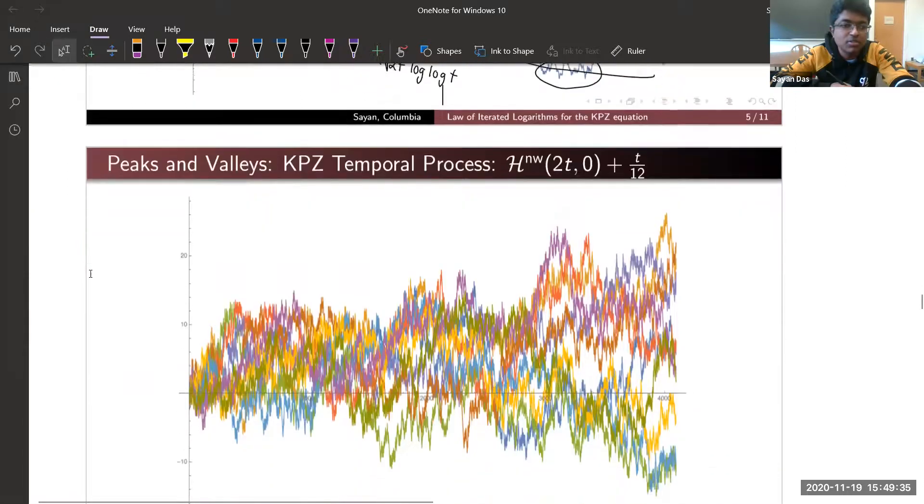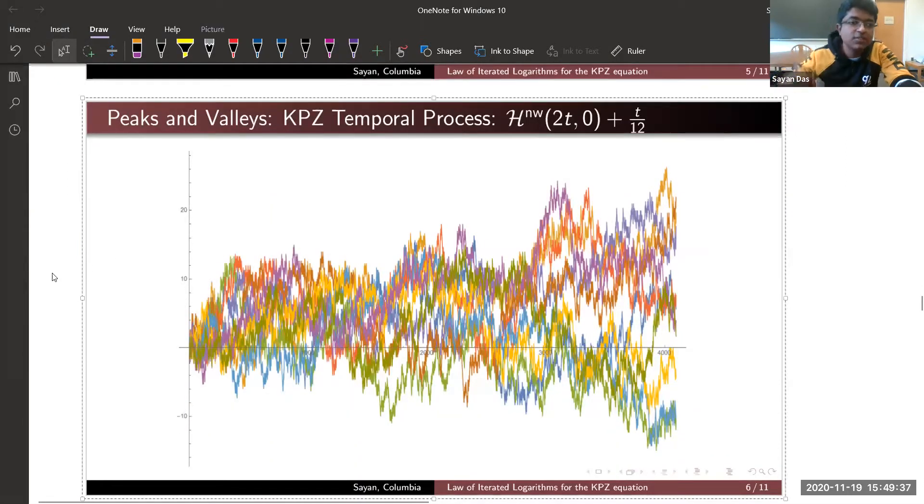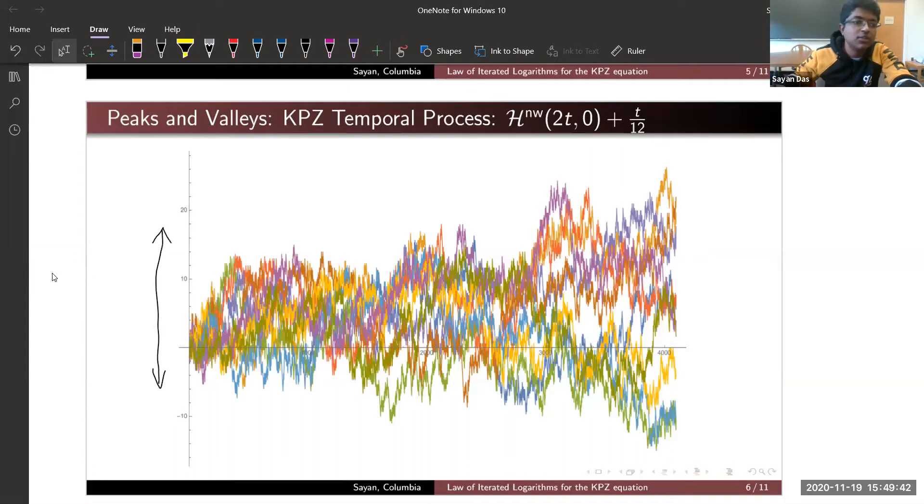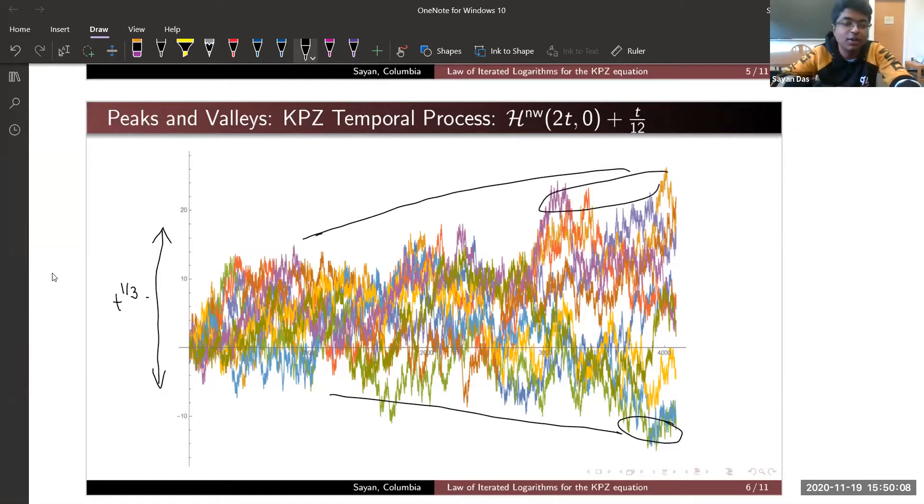What about my process H_t? I will call it the KPZ temporal process. In case of temporal process the fluctuations are of much smaller order—it is of t^{1/3}. What about the envelope? One thing is noticeable: it tries to go upward more than downward. The difference is much smaller compared to the upper one. If you try to construct an envelope, it is kind of guessable that this envelope is asymmetric, not similar to the Brownian motion.